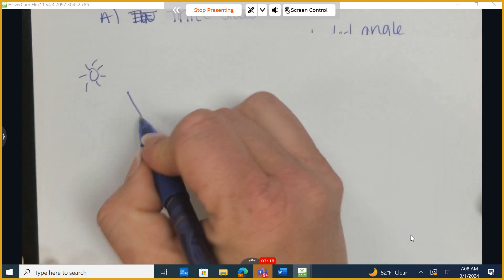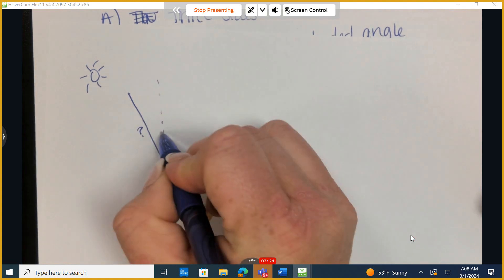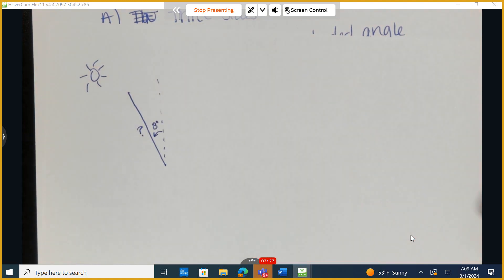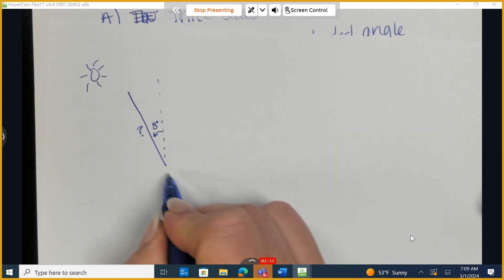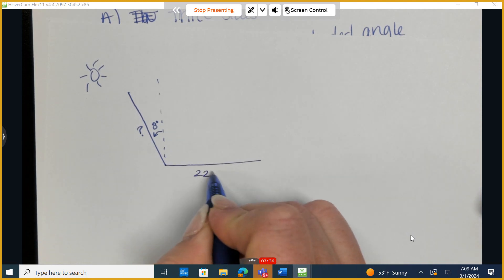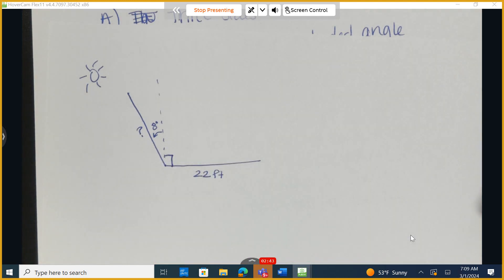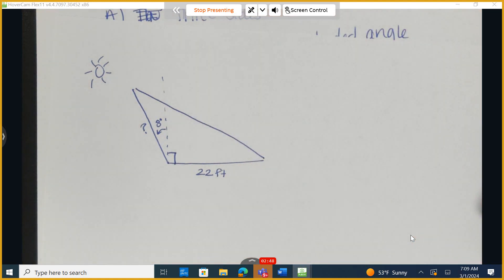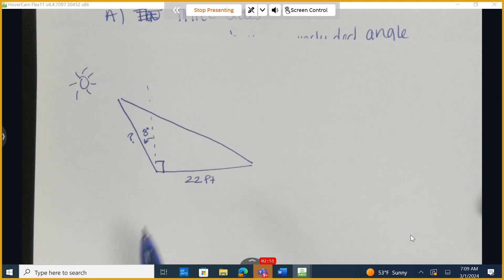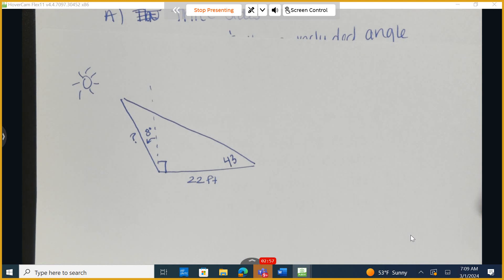We ultimately want to know how long is this pole, and it states that from a vertical position, it tilts 8 degrees in the direction of the sun. And it says that the shadow created from the sun is 22 feet long. Now from a vertical position down to the ground, that would be a 90 degree angle. So this is what I have right now. The last thing it says to us is the angle of elevation is 43 degrees.